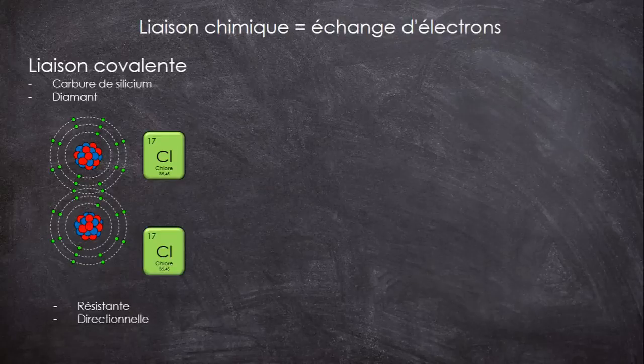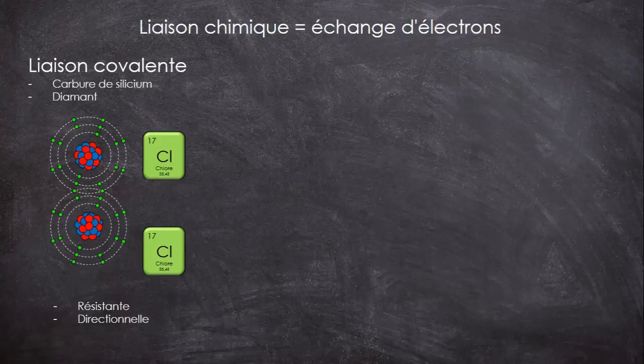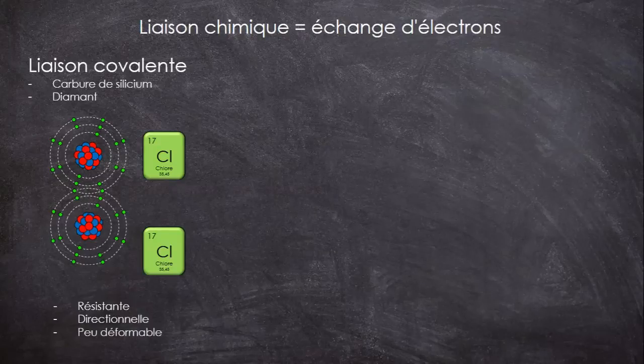C'est aussi un type de liaison très directionnel, d'où la forme coudée de la molécule d'eau par exemple, et qui est peu incline à se déformer. Donc les matériaux avec ce type de liaison sont plutôt cassants.